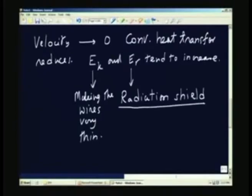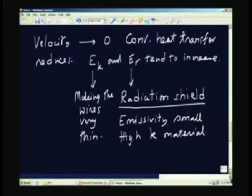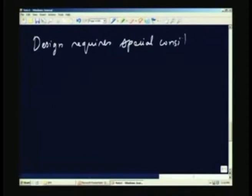As far as radiation is concerned, we can use a shield of low emissivity and possibly high thermal conductivity material. So the design of a probe for measuring the stagnation temperature requires special consideration. What are these special considerations? We will quickly look at them.